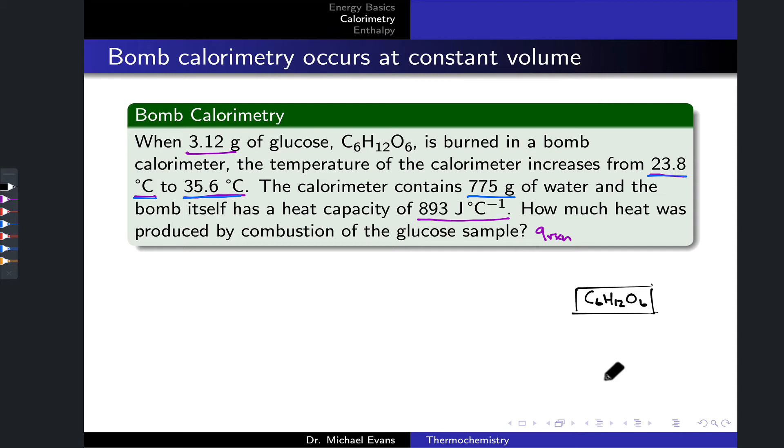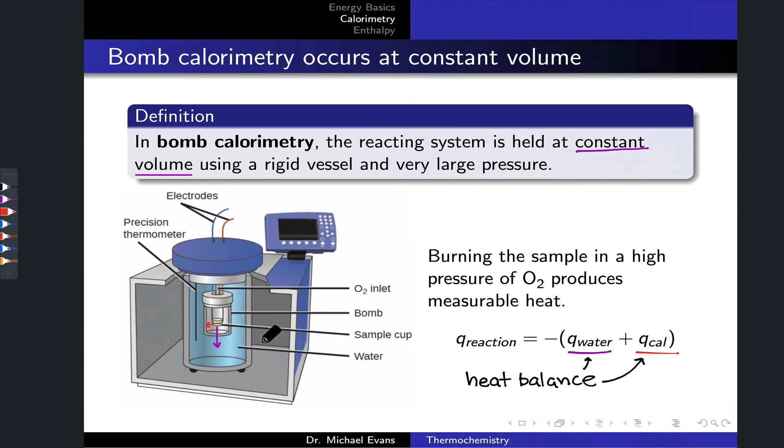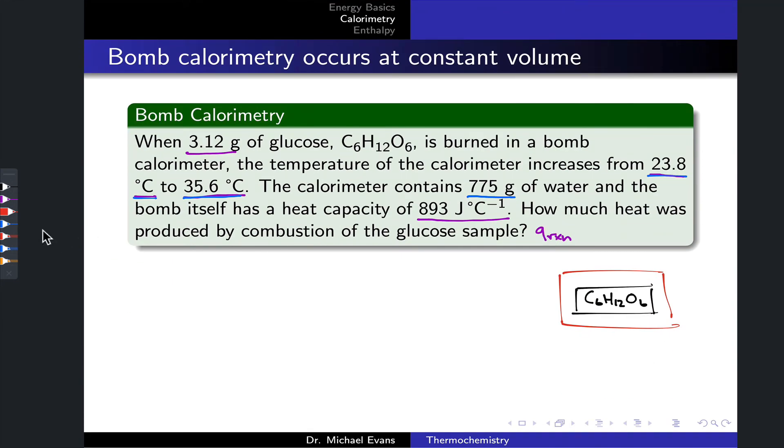We've got now two places where heat can flow as that glucose is combusted. We've got the walls of the bomb itself, going to represent those in red, since we represented that heat flow as red in this original figure above. And then we've got the water bath which surrounds the bomb, and that also serves as a heat sink as the glucose is combusted.